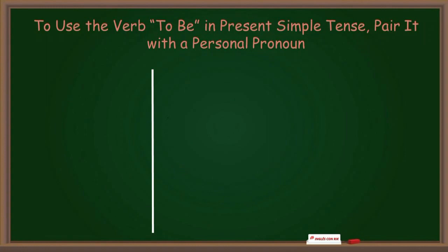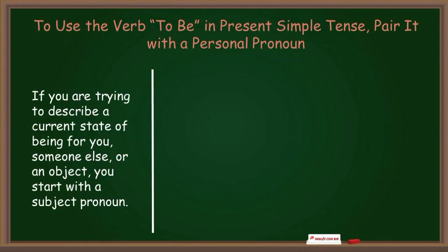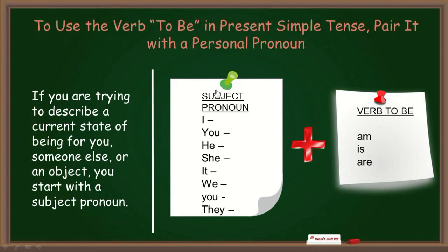To use the verb to be in present simple tense, pair it with a personal pronoun. A diferencia del español, el uso del verbo to be requiere de dos elementos: un pronombre personal y el verbo to be. Si estás tratando de describir un estado tuyo, de alguien más o de algún objeto, tú debes empezar con un pronombre. Los sujetos pronombres son muy importantes en inglés. Se dividen en dos grupos: singular y plural.